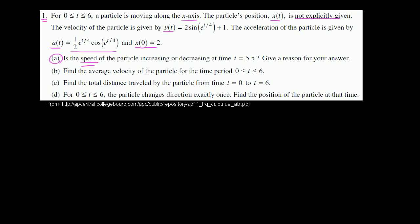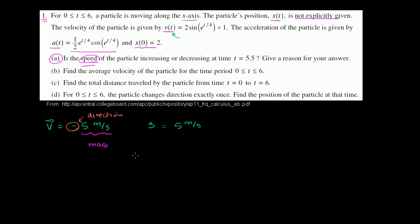They did something a little sneaky here, because they gave us a velocity function and then ask about speed. You might say those are the same thing, but they aren't. Velocity is a magnitude and a direction — it is a vector quantity. Speed is just a magnitude — it is a scalar quantity. For example, a velocity of negative 5 meters per second means moving leftward at 5 m/s on the x-axis. The magnitude is 5 m/s and the direction is specified by the negative sign. Your speed would just be 5 m/s whether you're going left or right.